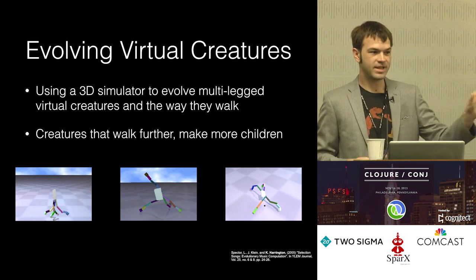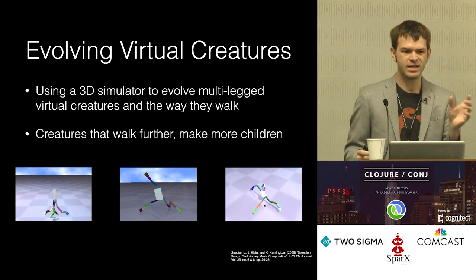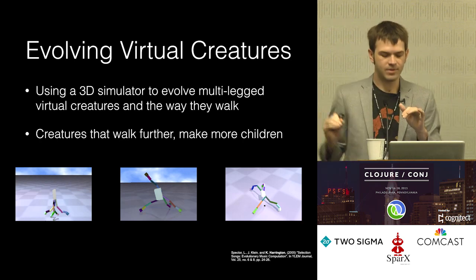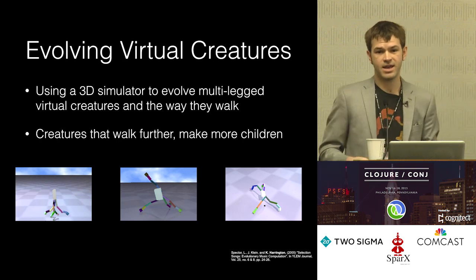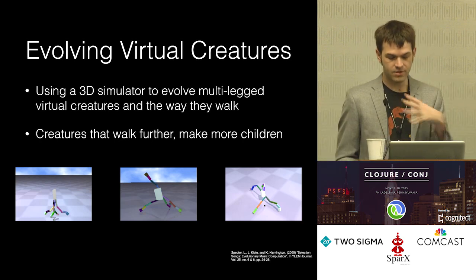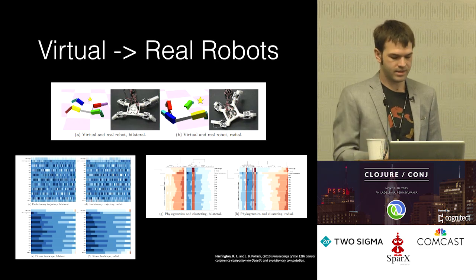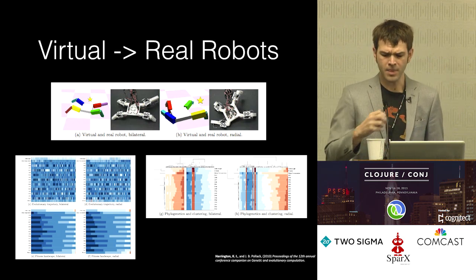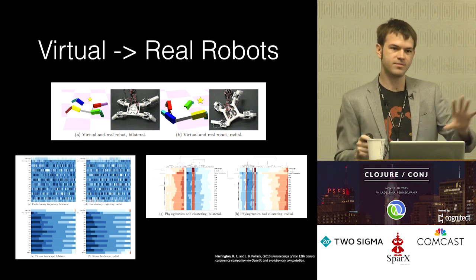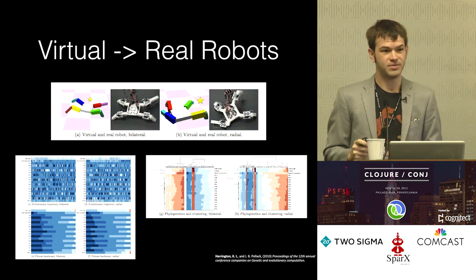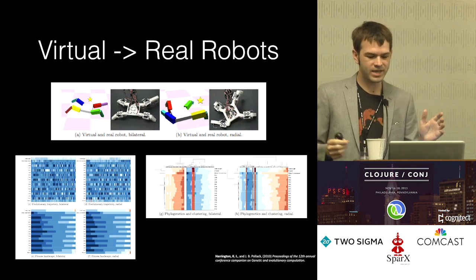We played a lot with these evolving virtual creatures. This is a simulation in Breve, which was at the time a scripting language, but it's a Python and C++ engine. You evolve these creatures, you let them walk — they have very simple controllers — you measure which ones can go further, select for those in a population and repeat, and you eventually get these nice walkers. Then I joined a robotics lab and we started making them physically. This was a simple study to compare two different morphologies; the radial one was able to walk further.